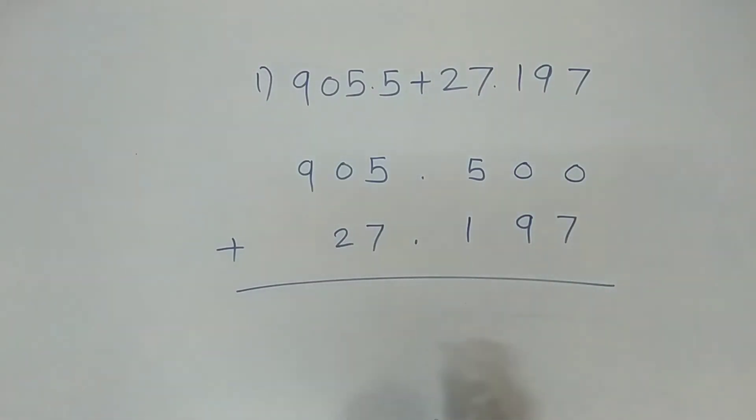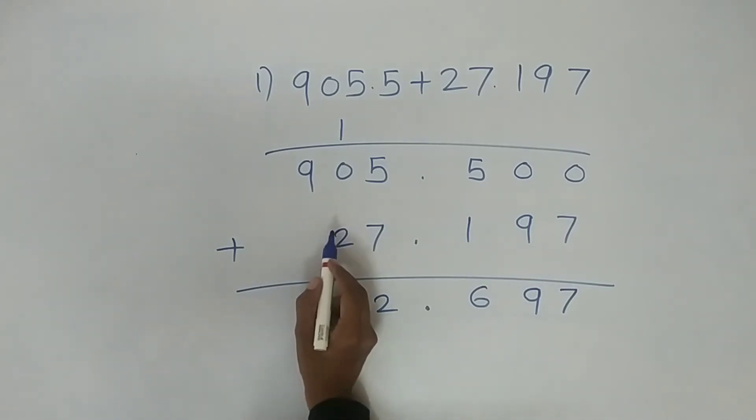Now add both numbers: seven plus zero is seven, nine plus zero is nine, five plus one is six. Put the decimal point. Five plus seven is twelve, one carry forward. Two plus zero plus one is three. Nine as it is.